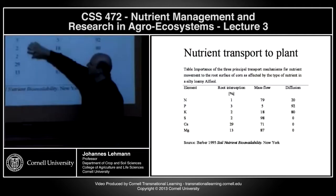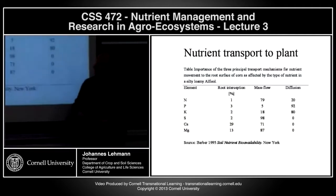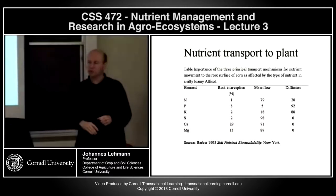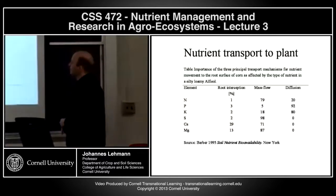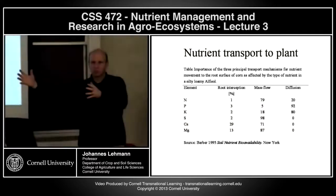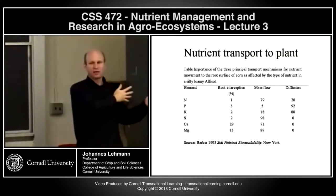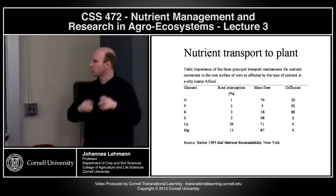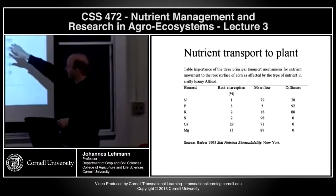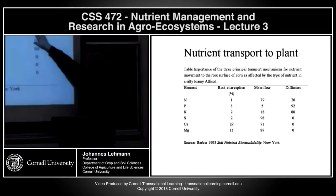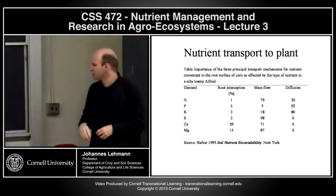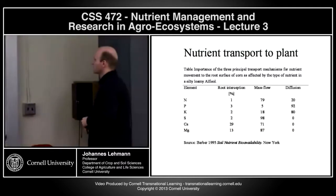Starting with nitrogen: root interception plays a very small, proportional role for nitrogen uptake. The bulk of nitrogen is taken up by mass flow — water flows into the root through transpiration and the nitrogen flows with it. Diffusion plays a role, but in this case study it was only 20% important for total uptake.